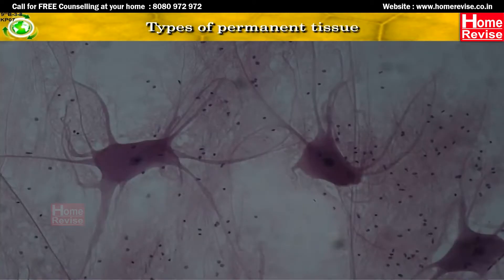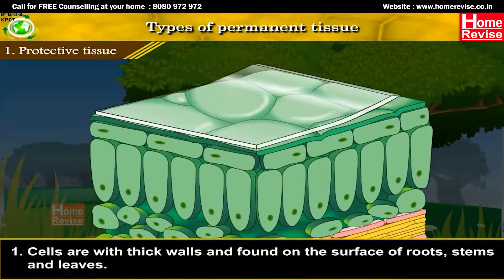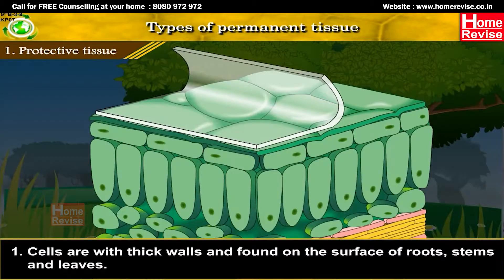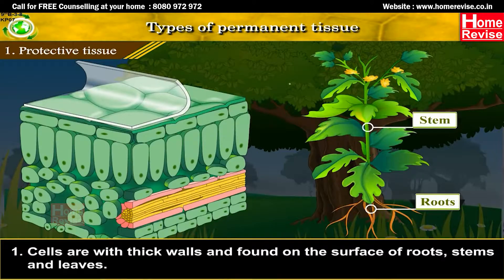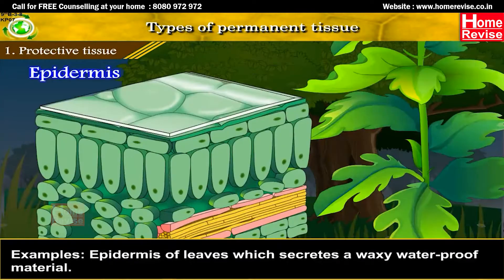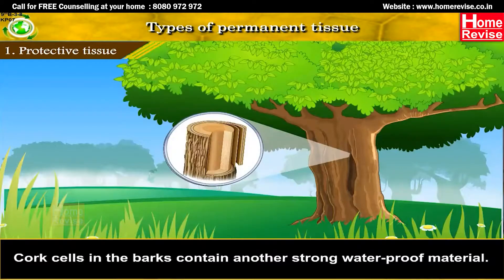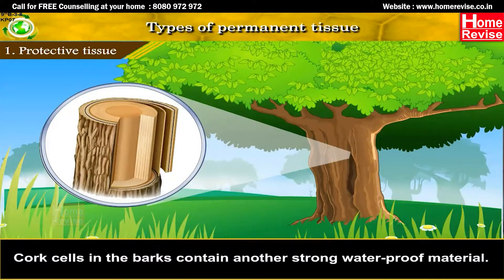Protective tissue cells have thick walls and are found on the surface of roots, stems and leaves. Examples include the epidermis of leaves, which secretes a waxy waterproof material, and cork cells in the barks, which contain another strong waterproof material.